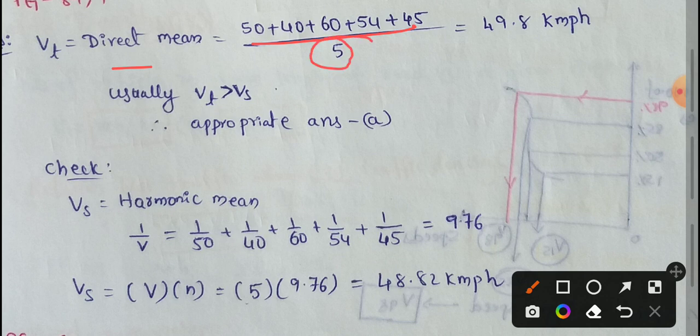To simplify the value, it is 49.8 km per hour.